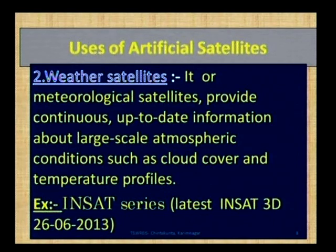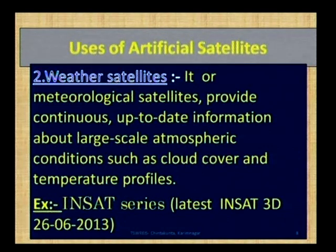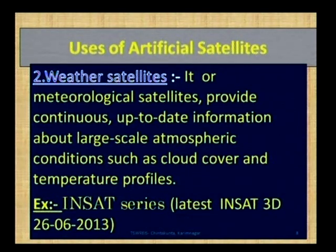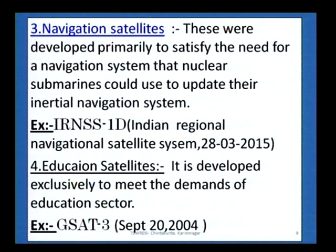Next one is weather satellites, also called meteorological satellites. They provide continuous up-to-date information about the weather and large-scale atmospheric conditions such as cloud cover and temperature profiles. Example: INSAT — Indian National Satellite — latest INSAT 3D, launched on 26th June 2013. Next one is navigation satellites. These were developed to satisfy the need for navigation systems that nuclear submarines could use to update their inertial navigation system. Example: IRNSS — Indian Regional Navigational Satellite System.